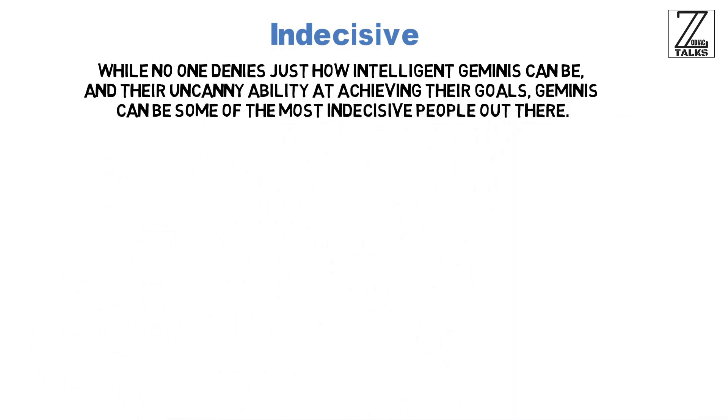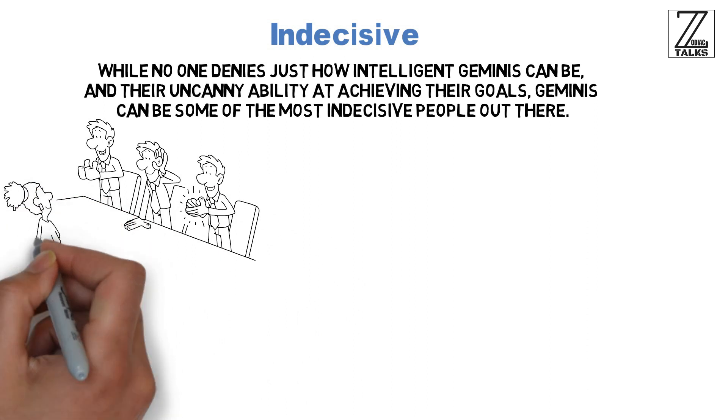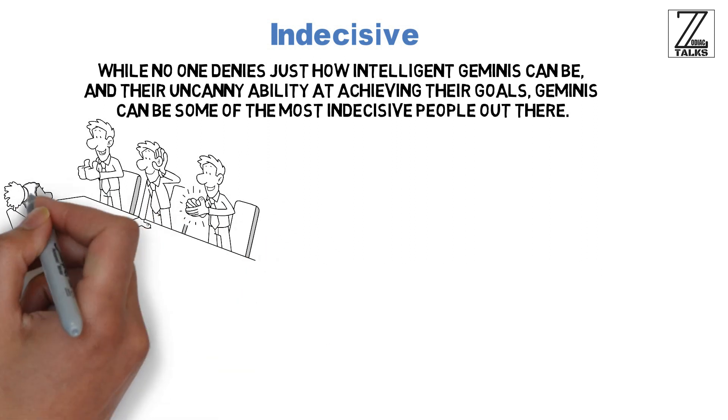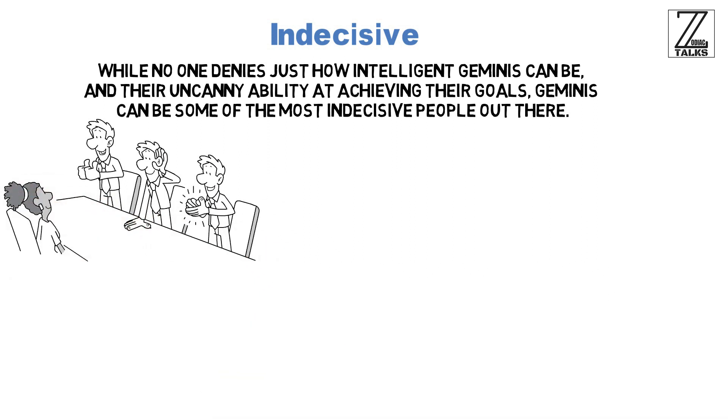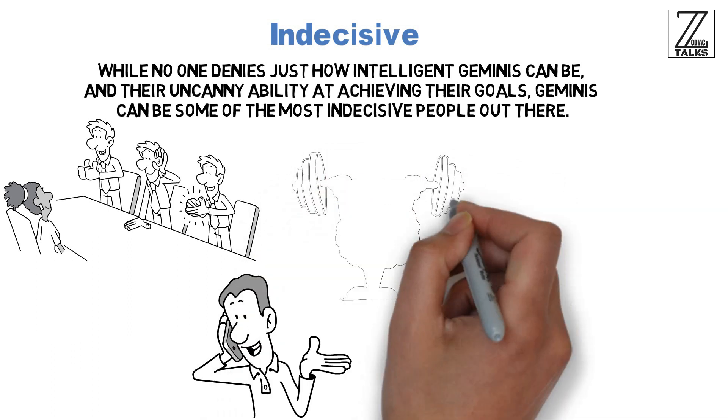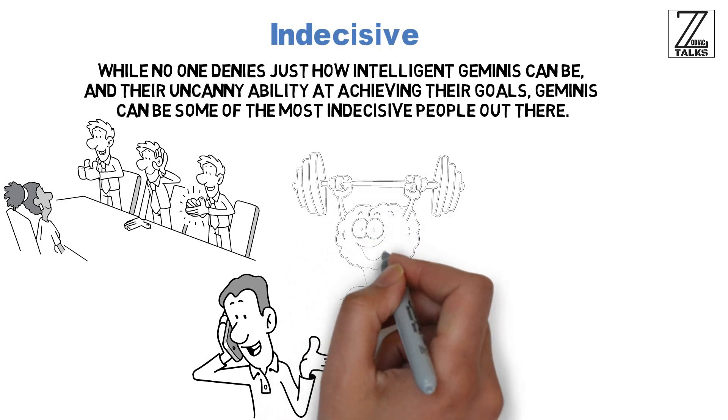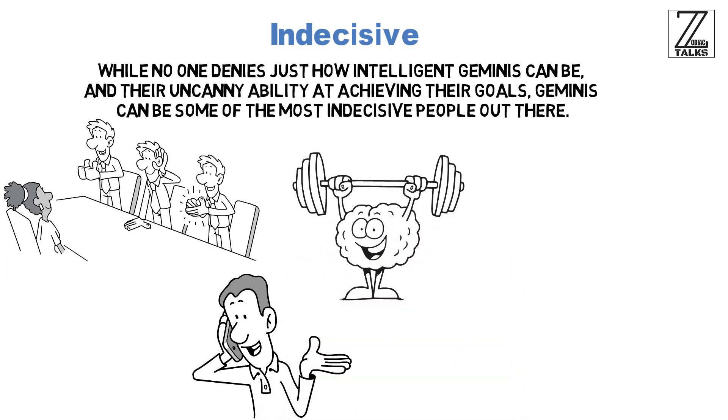Once they've finally settled for something, they're great at working on getting it, but expect them to take forever to decide on what they want. They're overly analytical and have an excellent memory for when their choices ended badly, which means that when presented with a choice, they'll try to analyze it from every possible angle before choosing, and even then they'll second-guess themselves for a while.